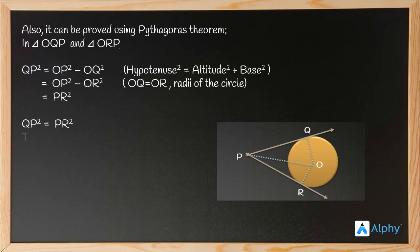PR². Now, taking square root on both sides, we get QP equals PR. Hence proved. Thank you.